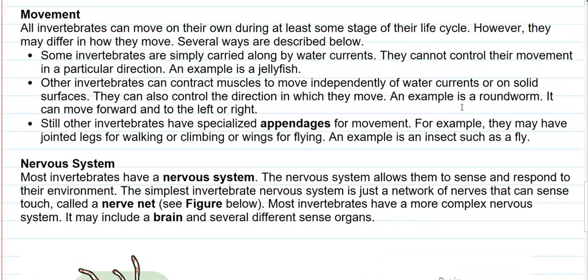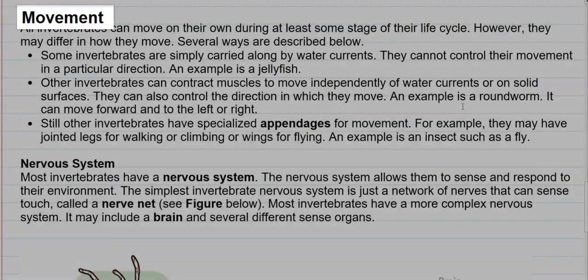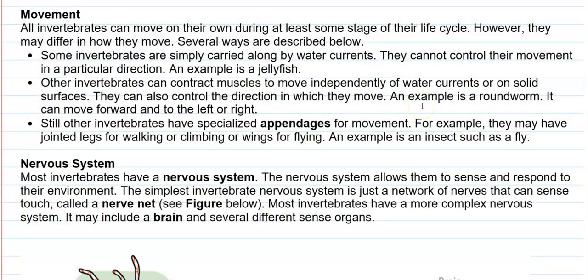Next we look at locomotion — the movement of invertebrates. All invertebrates can move on their own at least during some stages of their life cycle, though they differ in the structures aiding movement. Some invertebrates are simply carried along by water currents and cannot control their direction of movement — for example, the jellyfish. Others can contract their muscles to move independently of water currents, controlling direction of movement on solid surfaces — a typical example is the roundworm.